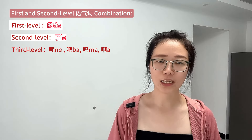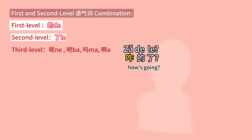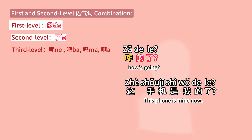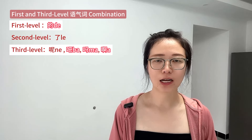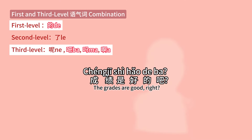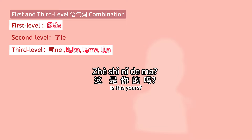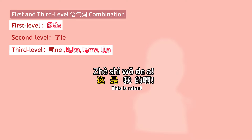First and second level 语气词 combination: 咋的了? 这手机是我的了. First and third level 语气词 combination: 成绩是好的吧. 这是你的吗? 这是我的啊.